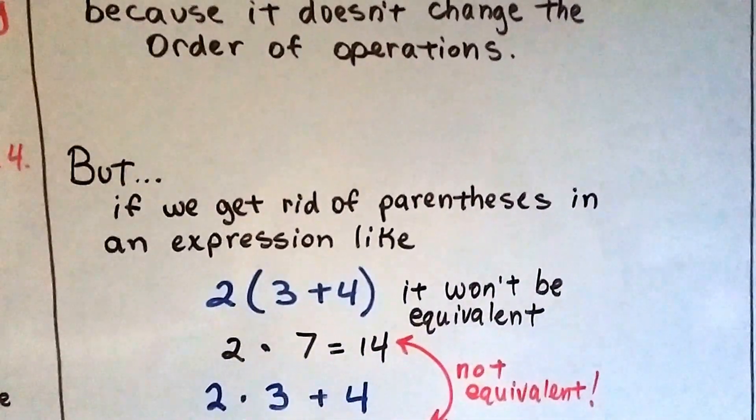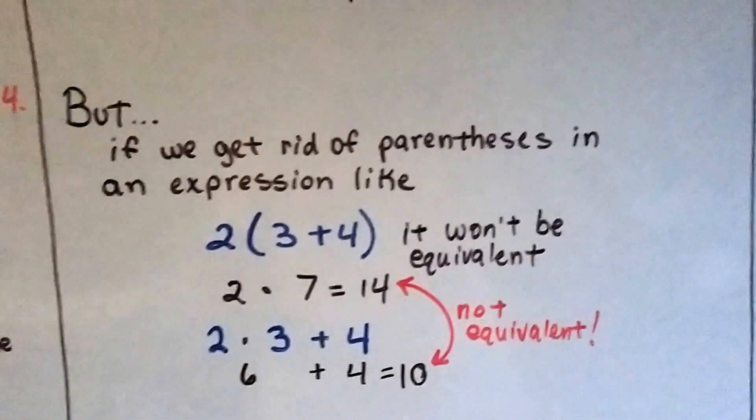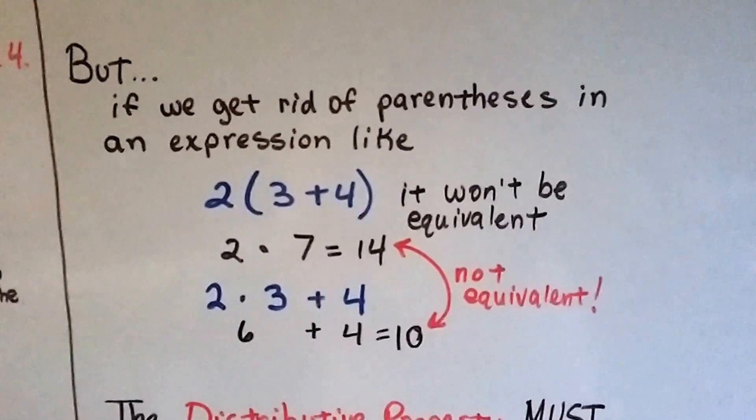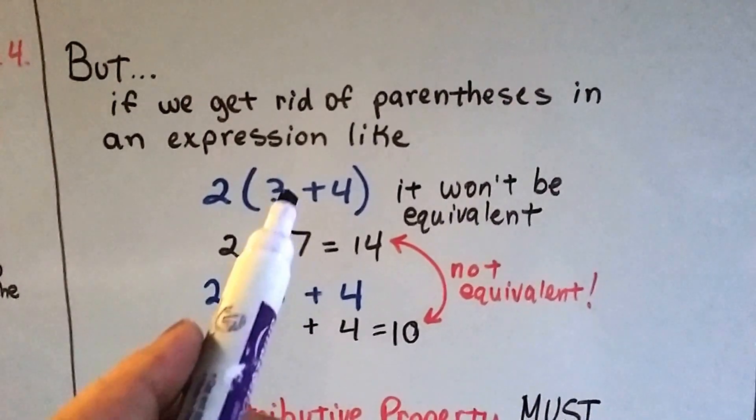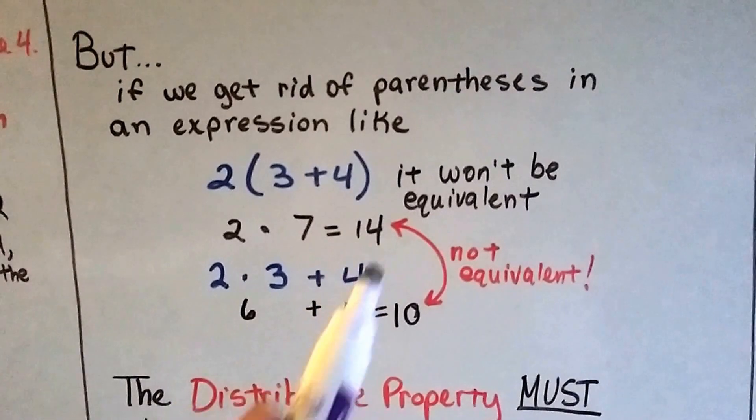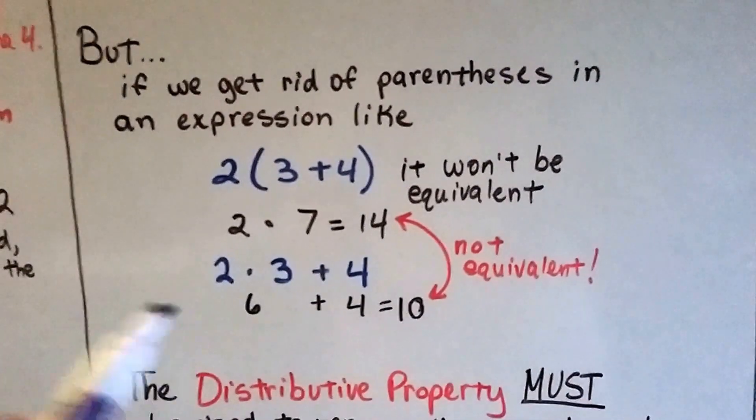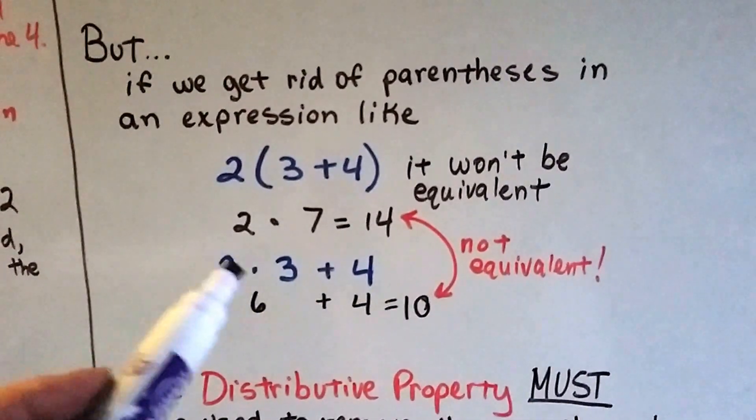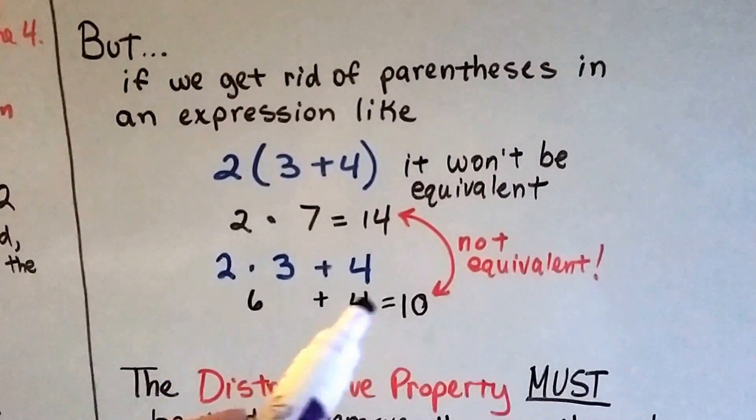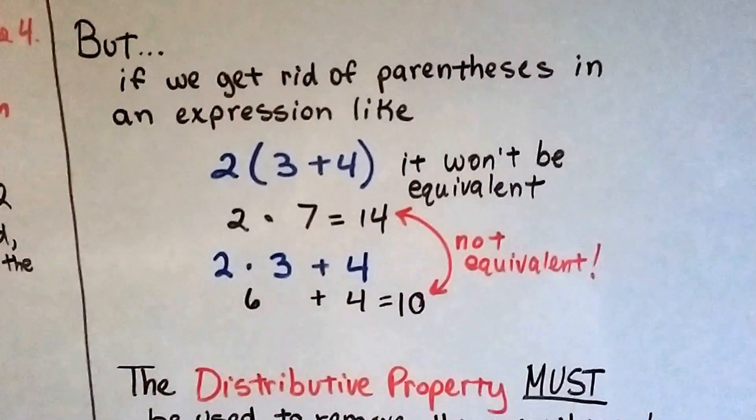But if we get rid of parentheses in an expression like 2(3+4), it won't be equivalent. Because if we do order of operations and solve 3 plus 4 first, that's 7 times 2 is 14. And if we take the parentheses away and just get rid of them, now we have to multiply and then add for order of operations, and 2 times 3 is 6 plus 4 is 10. That's not equivalent, 14 and 10.